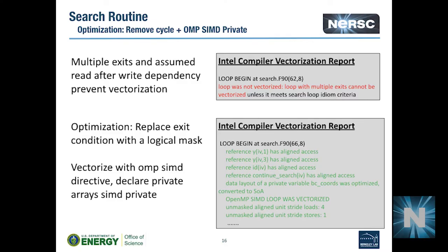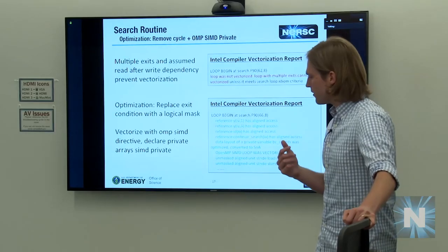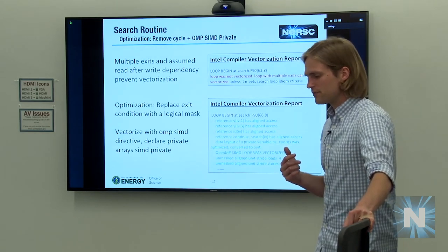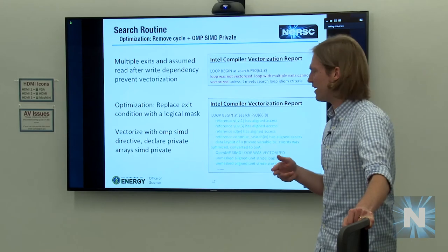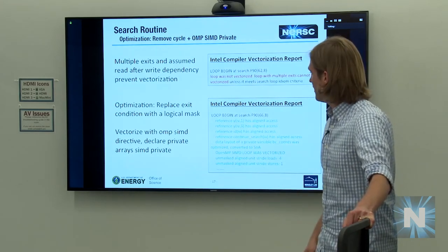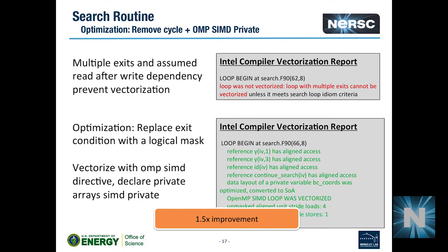Briefly, the search is a tricky function to vectorize because the trip counts of the loops are undefined — you loop until the search finds what it's looking for and exits. We found it beneficial to make the search loop not exit upon completion, but just keep running and mask out the iterations we're not interested in. By doing that, we went from the compiler saying it cannot vectorize due to multiple exit conditions, to vectorizing with decent efficiency. This was another 1.5x improvement to the performance of the whole code.